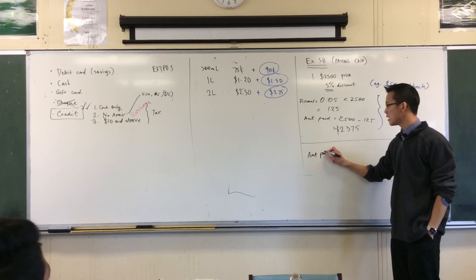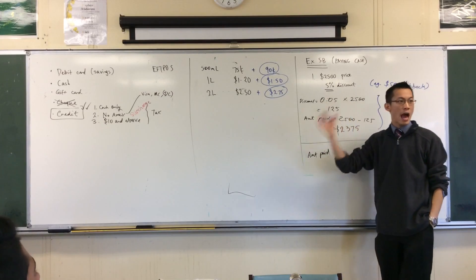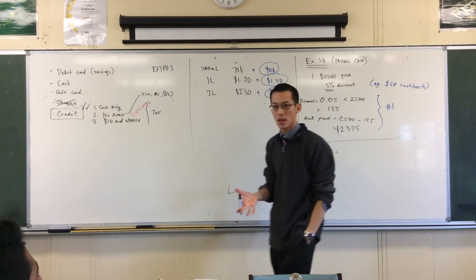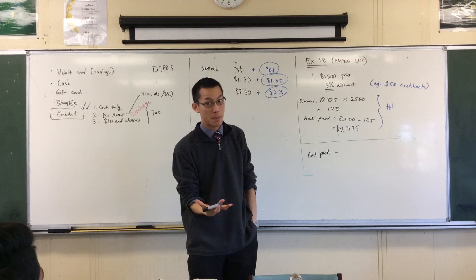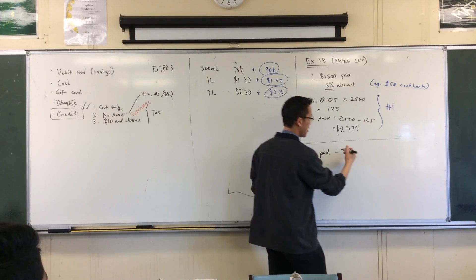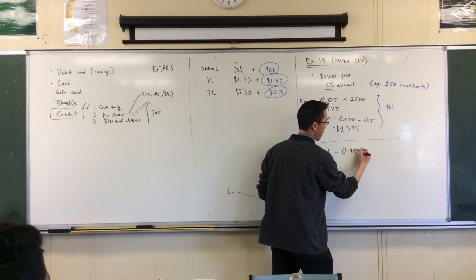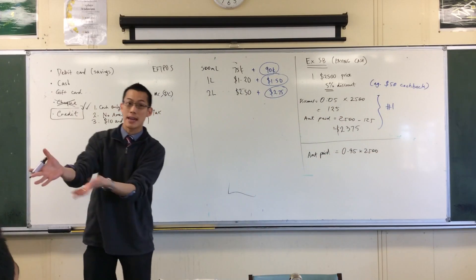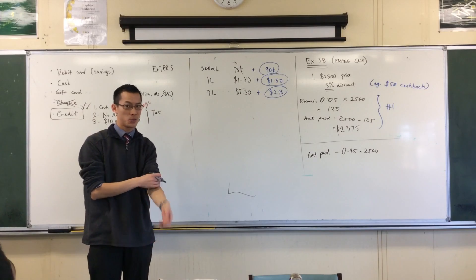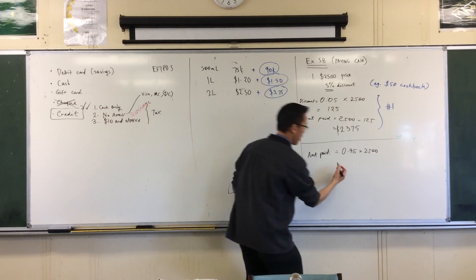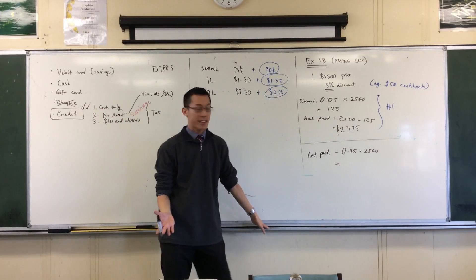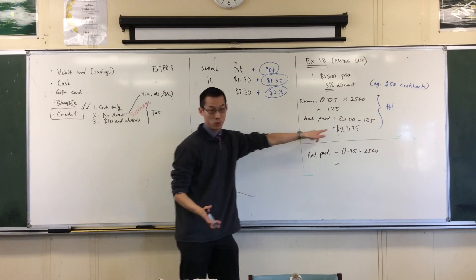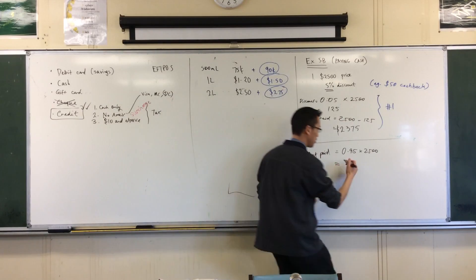I can say that, well, if you took off 5%, how much is left over as a percentage? 95. 95% is what you're actually paying, right? So I can say 0.95 of the whole amount. That's the 95%. That's how much you pay, right? It's not the discount, it's what's left after the discount. That, you can chuck in your calculator, and if we've done our numbers right, you'll get back 2375, just like you did before.